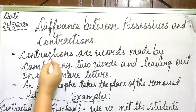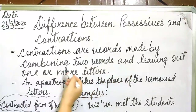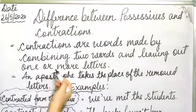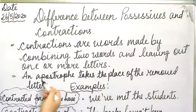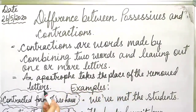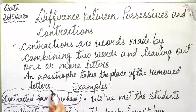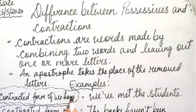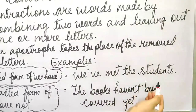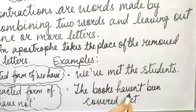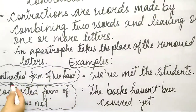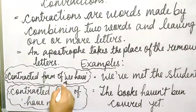Contractions. Contractions are words made by combining two words and leaving out one or more letters. The apostrophe takes the place of the removed letters. I have already explained this in my previous class. Examples: We have met the students. The books haven't been covered yet. So the contracted form of 'we have'...